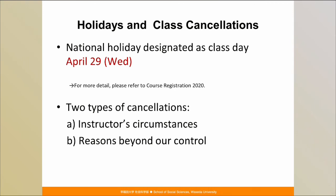Now, onto holidays and class cancellations. Japan has national holidays and the university also designates certain days as holidays. However, to ensure the stipulated number of classes per semester are met, classes will be held on some national holidays. In the spring semester, regular classes will be held on April 29th, a Wednesday. For more details, refer to the course registration booklet 2020. Regarding class cancellations, the first type is due to the instructor's personal circumstances — you will be notified in advance and a supplementary class will be scheduled. If an instructor gets sick, we will notify you as soon as possible, though notification may sometimes be extremely short notice.